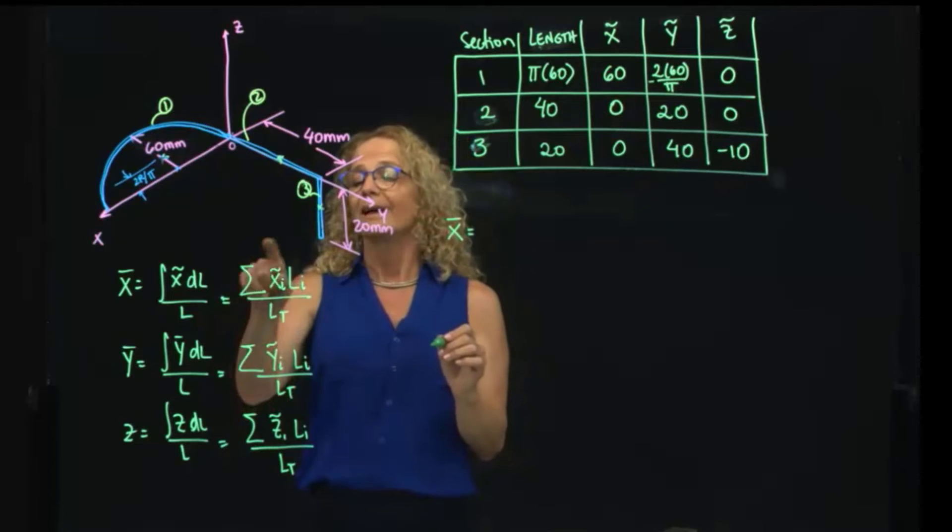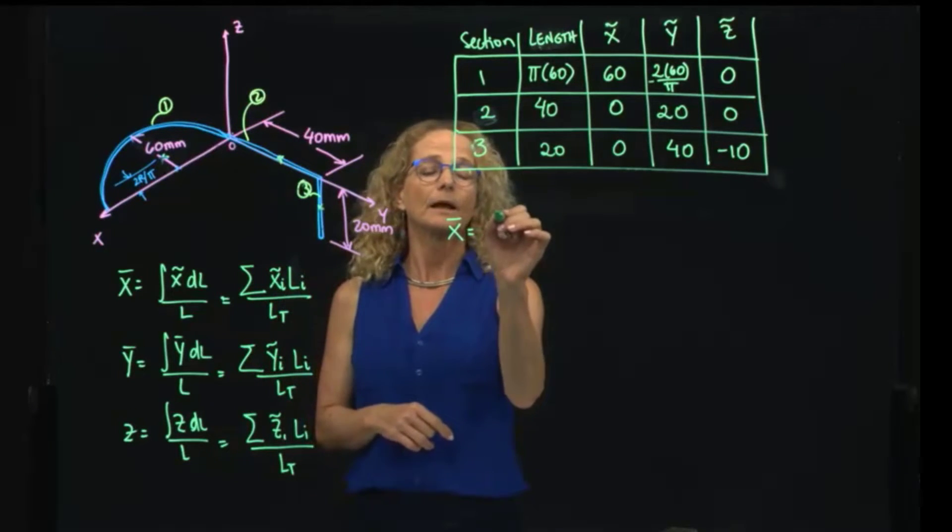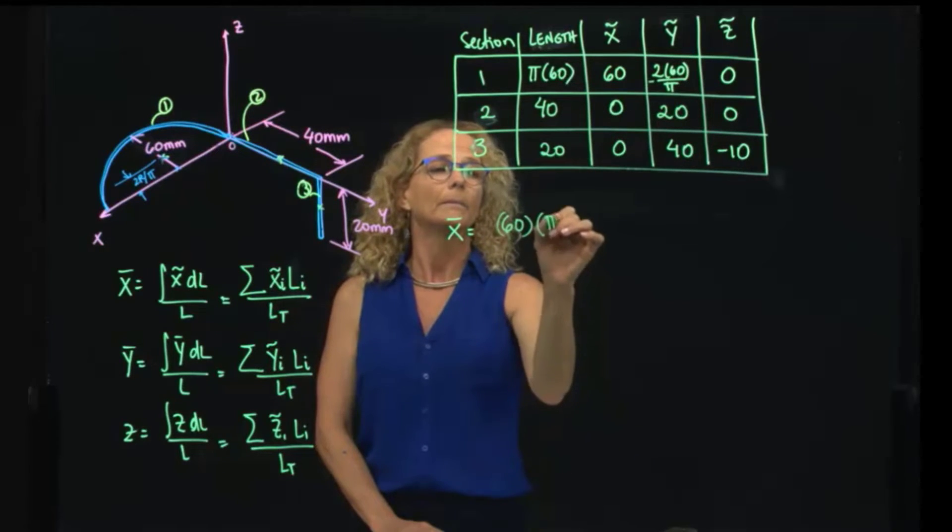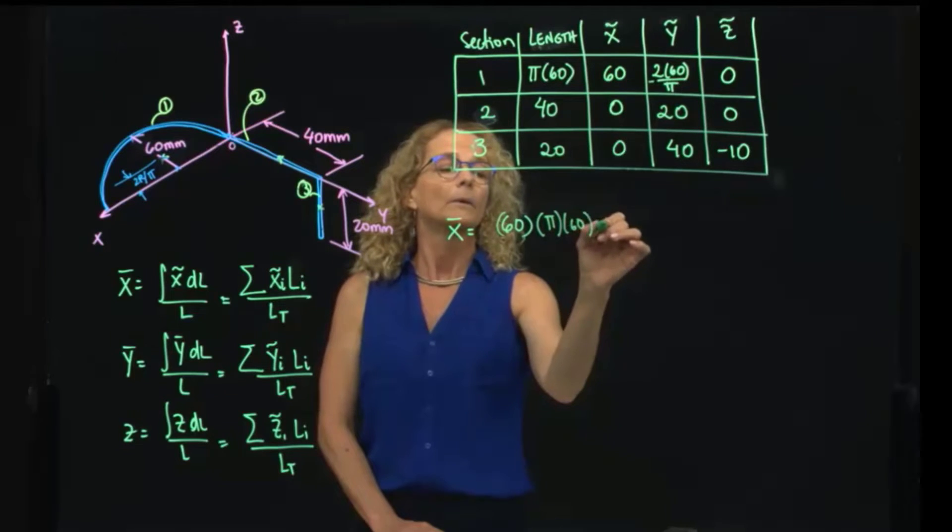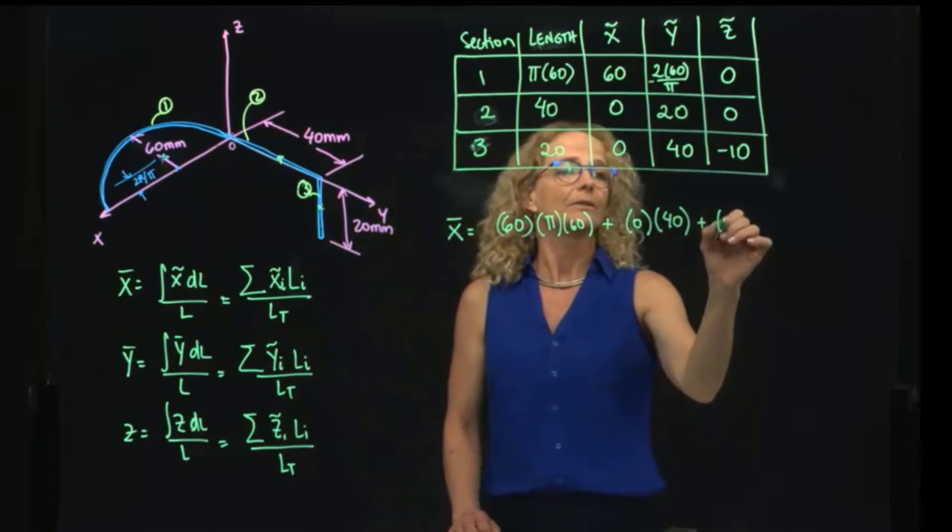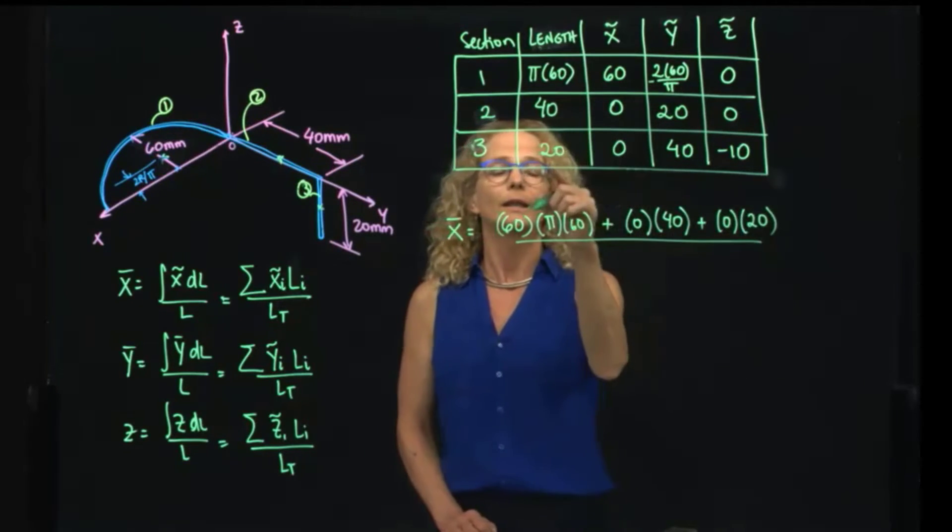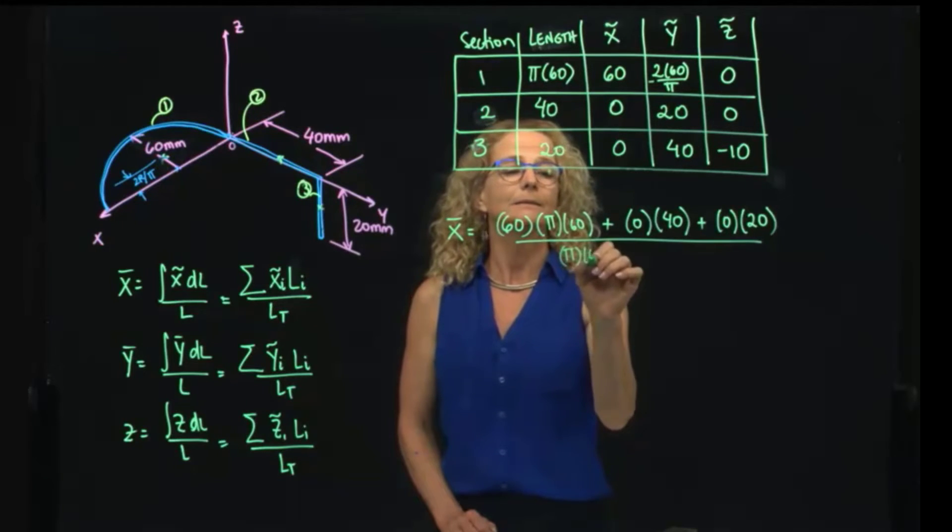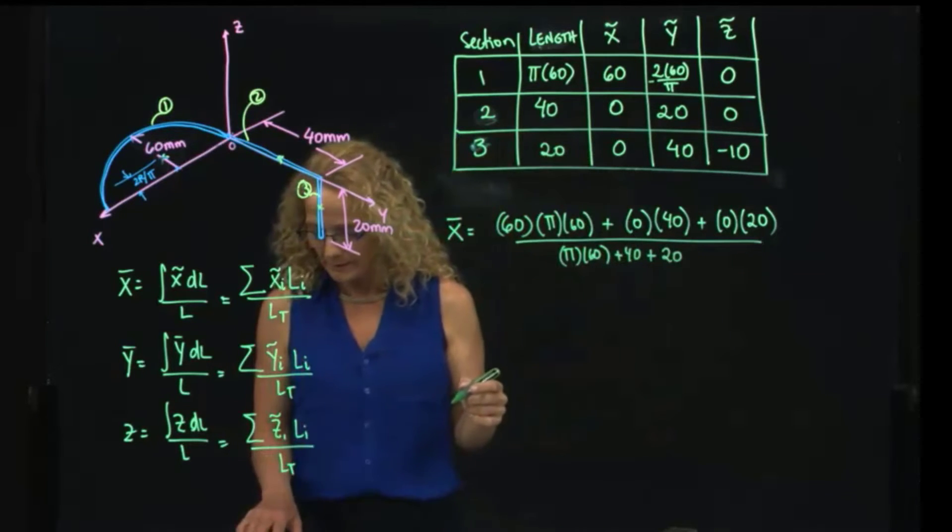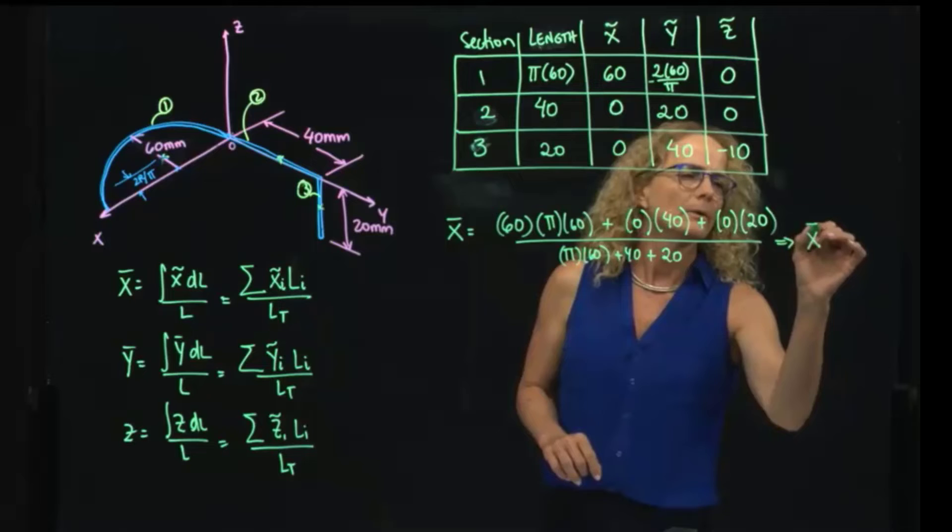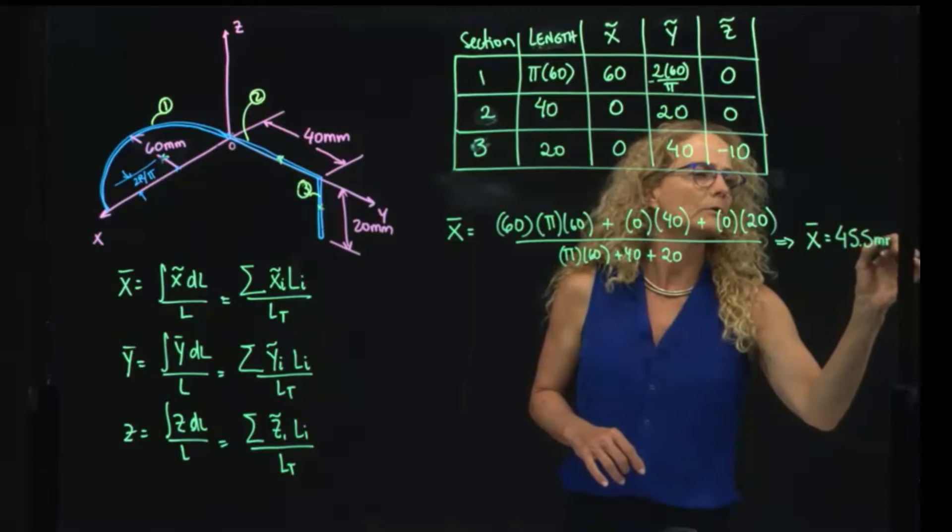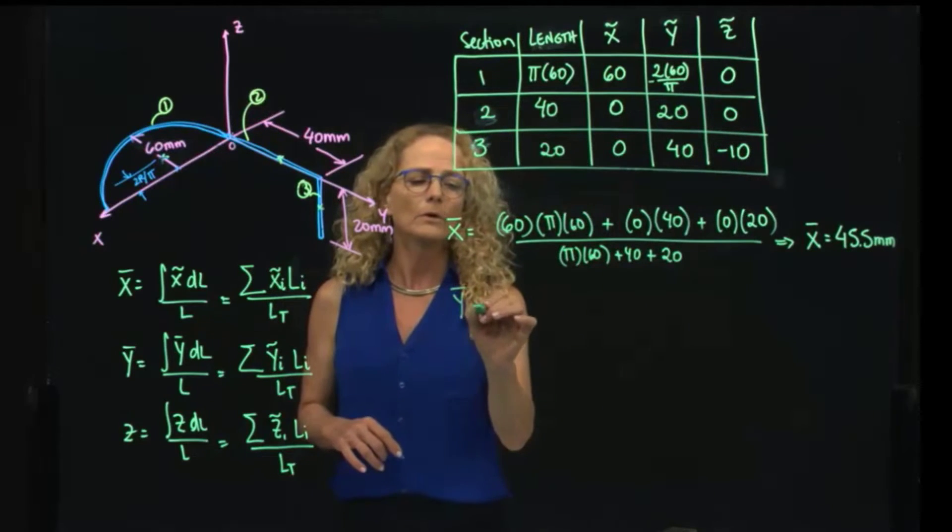Because what I have to do is add each of those ones, and this will be x1 times length 1, plus x2, length 2, plus x3, and all that divided by the total length. And the total length will be pi, 60, plus 40, plus 20. And I have that here, will be located at 45.5 millimeters.